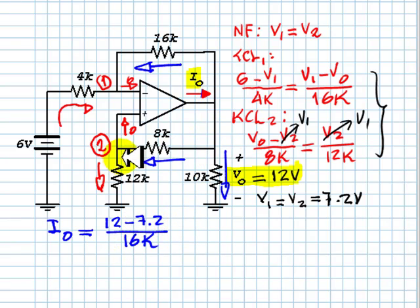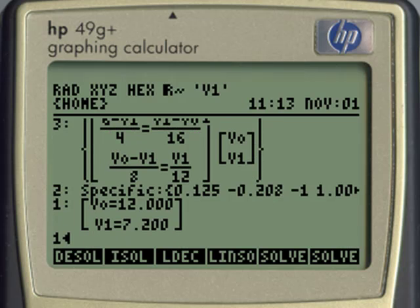Plus this current down here, which is V0 minus V2 divided by 8 kilos, more milliamps, plus the current in this resistor, which is V0 over 10, this is 12 volts over 10 kilos.